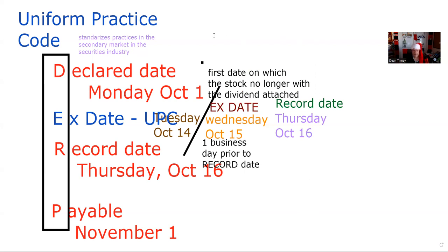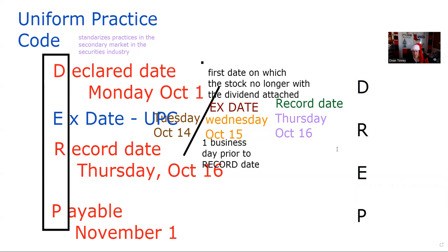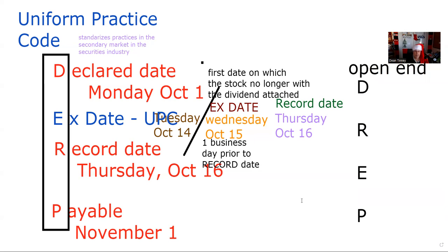The reason I made this video is people say, Dean, I thought I had this down — it was DERP — but now I'm getting questions where it's actually DREP. DREP means the declared date, the record date, and the X date is one business day after the record date, and they're all set by the board of directors. This is because DREP applies to open-end funds, where there is no secondary trading. The open-end fund knows on any given day who its shareholders are, so the declared date, record date, X date, and payable date are all controlled by the board of directors.